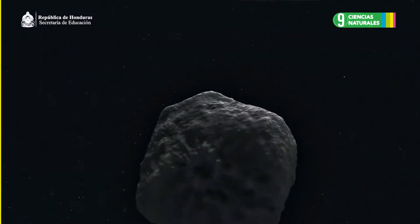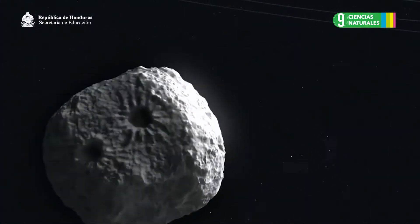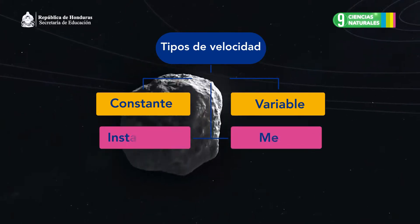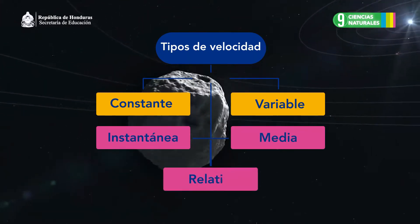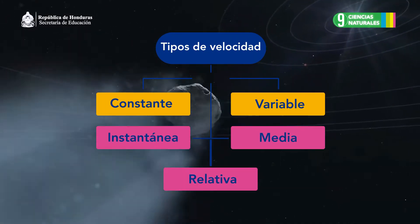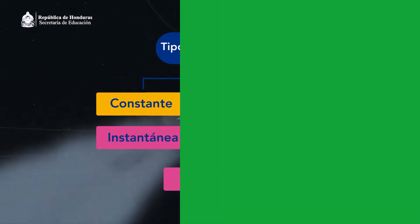Según el lapso de tiempo recorrido, la velocidad puede ser de diversos tipos: constante, variable, instantánea, media y relativa. Vamos a describir cada uno de ellos.